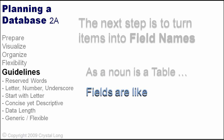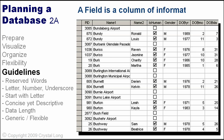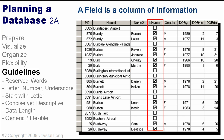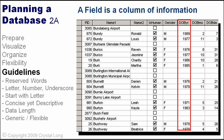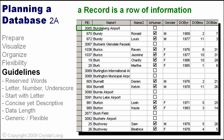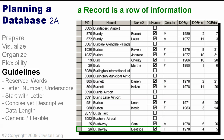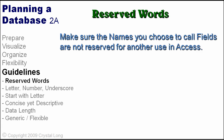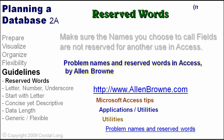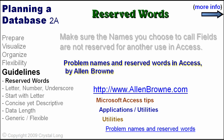The next step is to turn items into field names. A field is a column of information in a table. A row is a record of information in a table. Make sure the names you choose to call fields are not reserved for another use in Access. Look up problem names and reserved words on Allen Brown's site. Go to AllenBrown.com, click on Microsoft Access Tips, look in the Application Utilities section at Utilities, then click on Problem Names and Reserved Words.